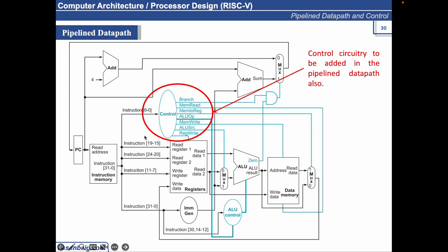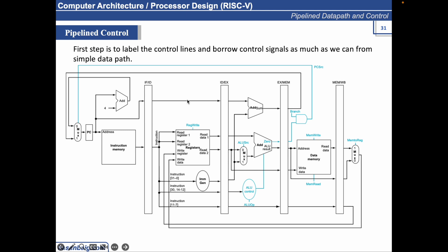What is the first step to add the control signals? The first step is to label the control lines on the existing data path. In this figure, we borrow as much as we can from the control for the simple data path. As with the single cycle implementation, we assume that the PC is written on each clock cycle, so there is no separate write signal for the PC. By the same argument, there are no separate write signals for the pipeline registers — IF/ID, ID/EX, EX/MEM, and MEM/WB — since the pipeline registers are also written during each clock cycle. So there are no control signals for these registers or for the PC.